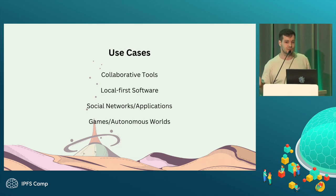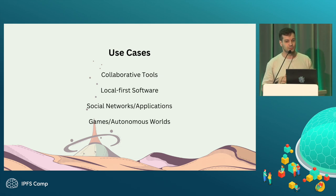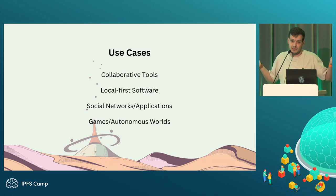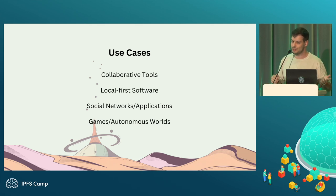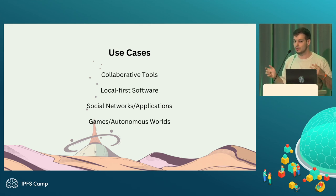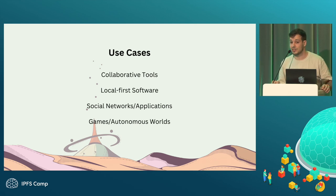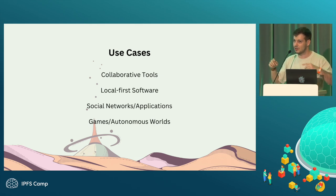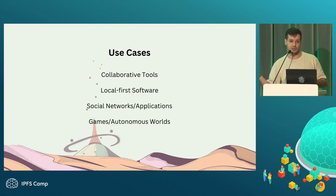There are quite some use cases for this. Collaborative tools is one of the main use cases — the Local First community is always thinking about collaborative tools, and it's one of the easiest ways to implement these. You can think about Google Docs, Figma, having a collaborative environment. Then we also have social networks — even Farcaster is super popular and it's based on a CRDT, a big CRDT where you put posts and have a set for deletions. And then you have games and autonomous worlds, which is a big area mostly in the blockchain space.